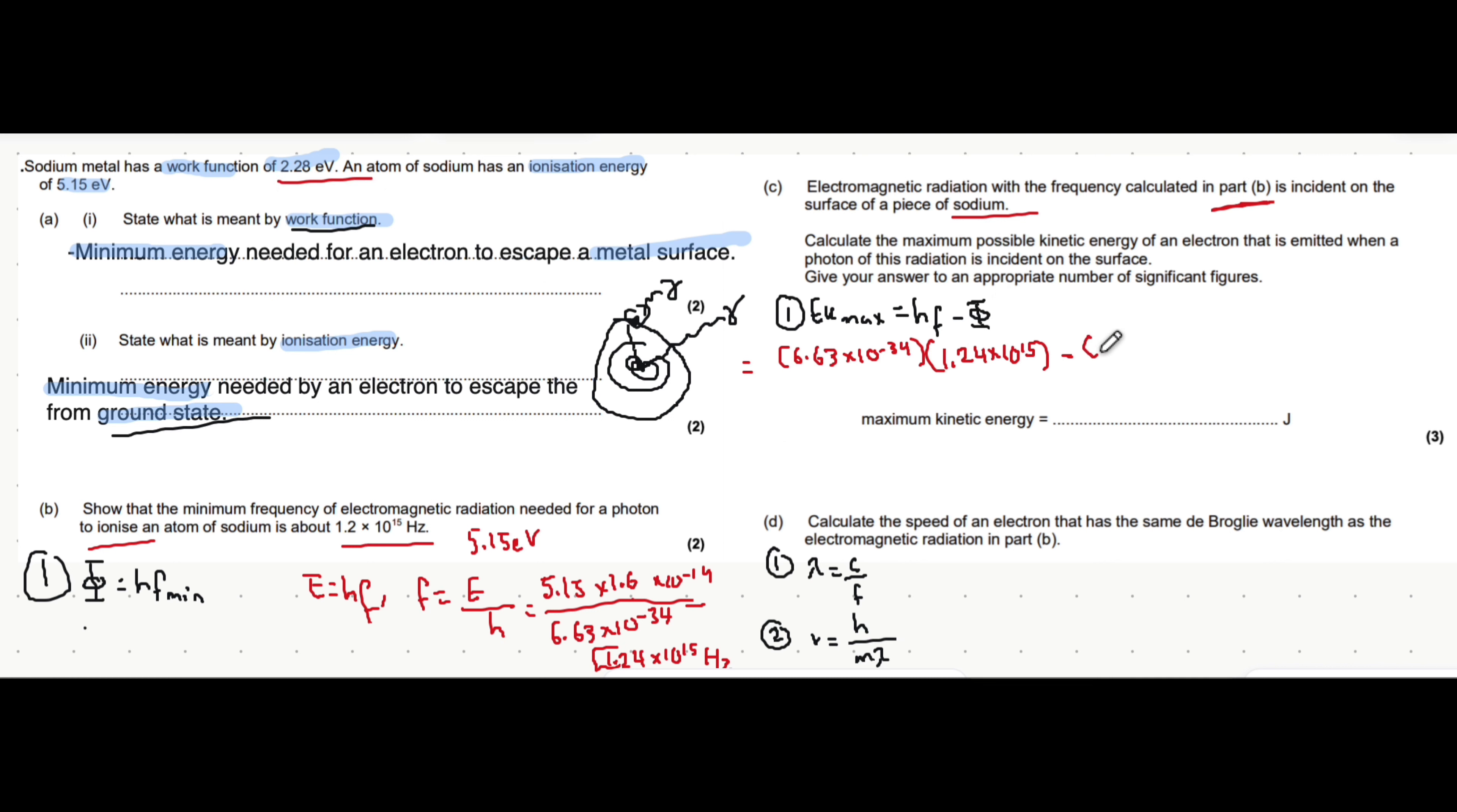The work function is the minimum energy needed for an electron on the surface to escape the atom completely, given in electron volts. Once again, we have to convert into joules. This symbol just means work function. We know E equals hf, and work function equals h multiplied by f_min, the threshold frequency. Let's convert work function into joules: 2.28 multiplied by 1.6 times 10 to the minus 19. That gives 4.59 times 10 to the minus 19 joules. Always go for three significant figures as a rule of thumb.